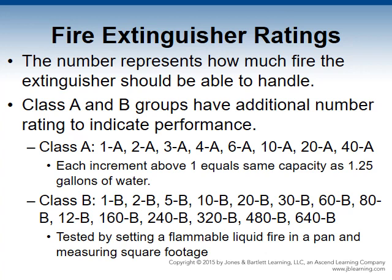Class A and B extinguishing groups have an additional number rating to establish their performance capability, representing how much fire the extinguisher can handle based on testing criteria. ANSI and UL 711 rating and testing was developed by UL and adopted by the American National Standards Institute. Class A extinguishers can be rated 1A through 40A; 1A through 20A are based on indoor tests, and 30A and 40A on outdoor tests. Each increment of 1 before the letter indicates the extinguisher has the same capacity as 1.25 gallons of water, so a 4A extinguisher equals 5 gallons of water. The higher the rating, the larger the extinguisher.